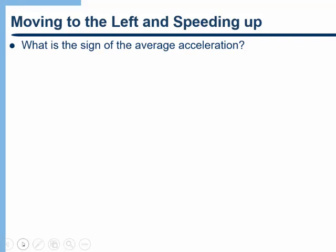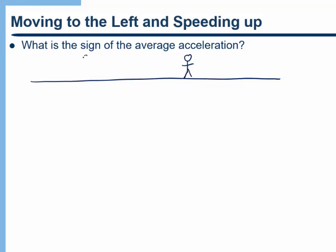Let's look at this question. We have an object moving to the left and speeding up. What is the sign of the average acceleration? Do you think the acceleration is positive or negative in this case? You might pause the video and think about it a little bit. To help us go over it, I'm going to first draw out the situation. My object is going to be a person, and I'm just going to make up some numbers that correspond with the question. So our person is moving to the left and they're speeding up. Therefore, I'm going to say that their initial velocity is negative 10 meters per second, since they're moving to the left.